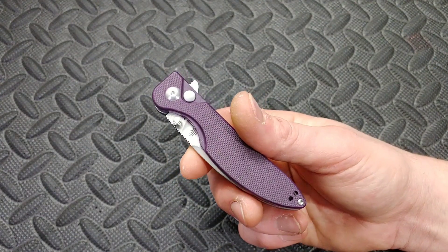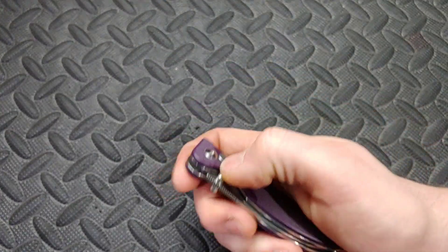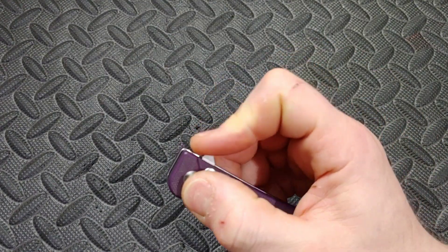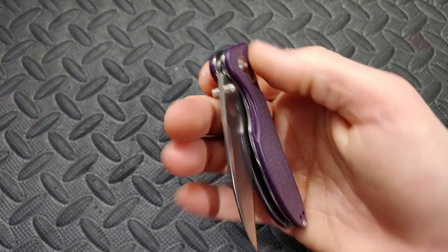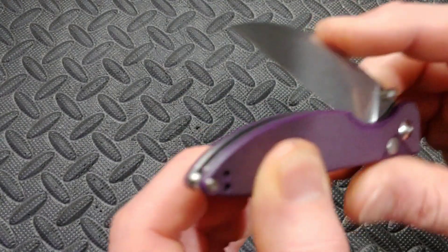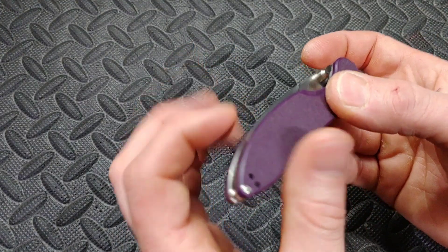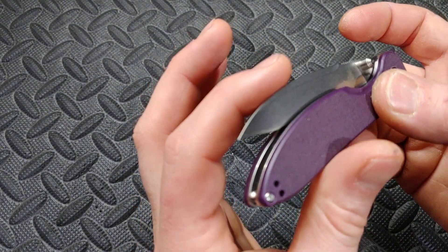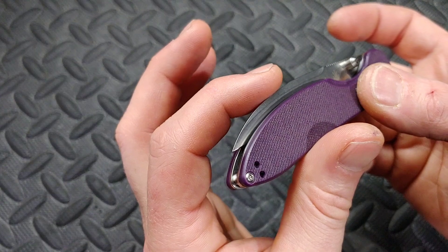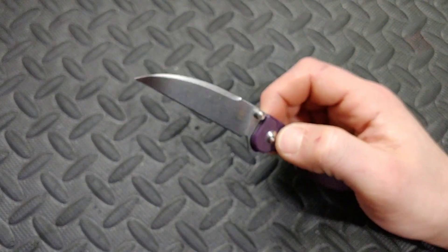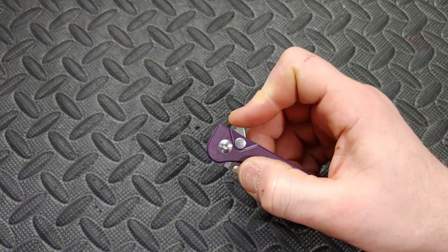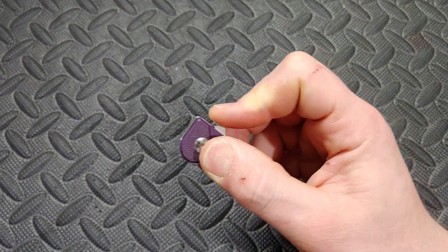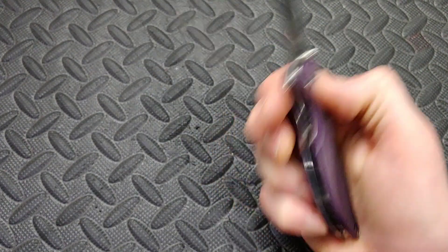Next up the Kizer Swag Swayback. This is a button lock. So it's surprising that it has as strong of a detent as it does. I would have never thought that this knife would have such a clicky detent but it does and it makes it to where this thing really flies out when you use the flipper tab and it does not have any detent lash which a lot of flipper button lock knives do.